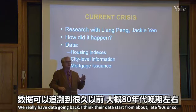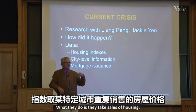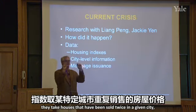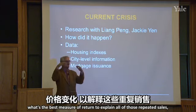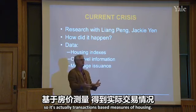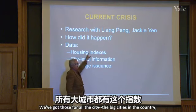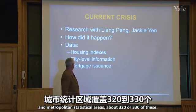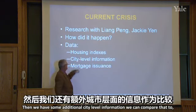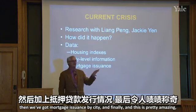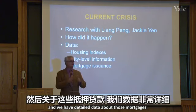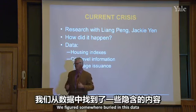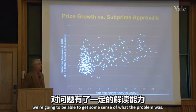The Shiller indexes take houses that have been sold twice in a given city — thousands of them — and figure out the best measure of return to explain all of those repeated sales. So it's a transactions-based measure of housing for about 320 to 330 major metropolitan statistical areas. We also have some additional city-level information, mortgage issuance by city, and — pretty amazingly — for 2006, we took all the mortgages issued in the entire country and have detailed data about every one of them.